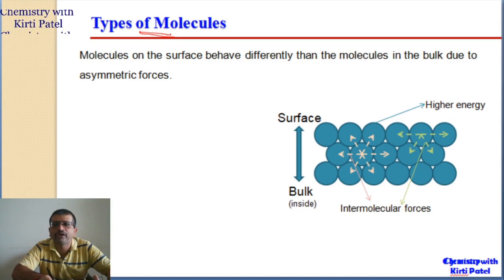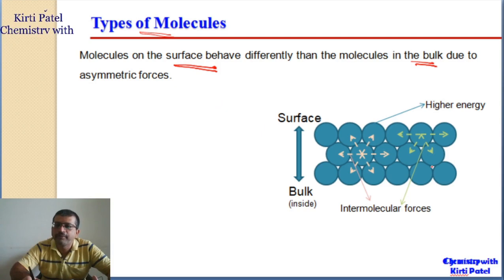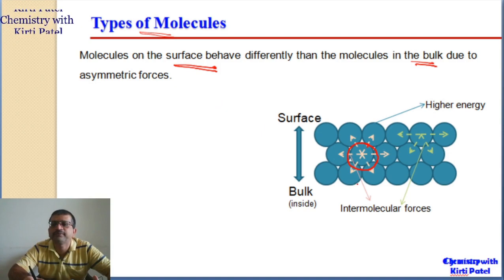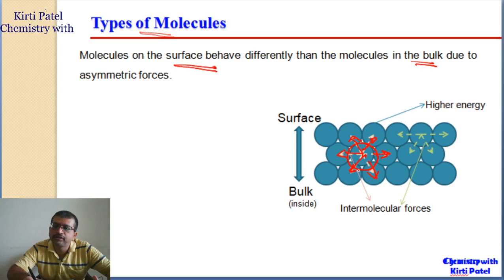In the first lecture we saw that there are different types of molecules. One is the surface molecules and the other which are present inside the bulk. In the bulk, molecules are surrounded by other similar types of molecules from all sides, so they face a symmetric force of intermolecular attractions from all sides. Because of that, the molecule inside the bulk has a balanced force in all directions and hence its energy is reduced.